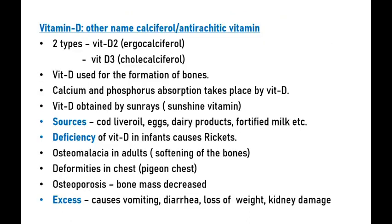The next vitamin is Vitamin D. Its other name is calciferol or anti-rachitic vitamin. There are two types: Vitamin D2 (ergocalciferol) and Vitamin D3 (cholecalciferol). Vitamin D is used for the formation of bones. Calcium and phosphorus absorption takes place with the help of Vitamin D. If Vitamin D is present, calcium and phosphorus are absorbed into the blood for bone formation. Vitamin D is obtained from sun rays and is also known as the sunshine vitamin.